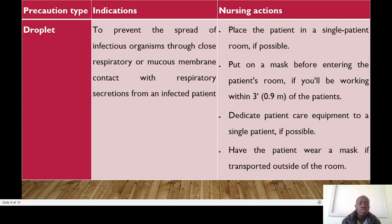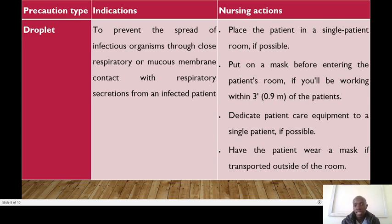For droplet precautions, these are designed to prevent the spread of infectious disease from close respiratory or mucous membrane contact with respiratory secretions from an infected person. As an RN, you need to place this patient in a single room if possible. You put on a mask before entering the patient's room if you will be working within 0.5 to 0.9 meters of the patient.